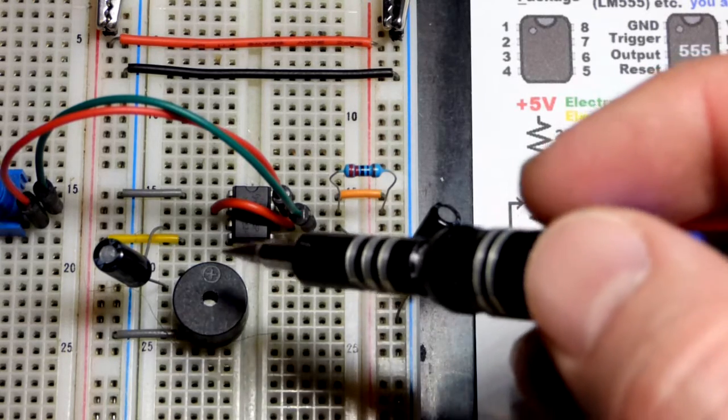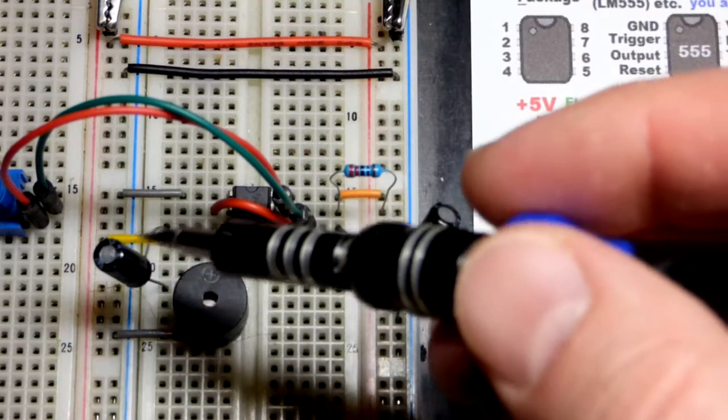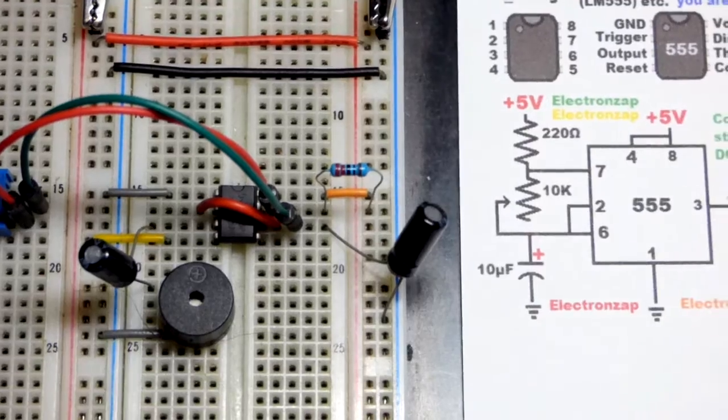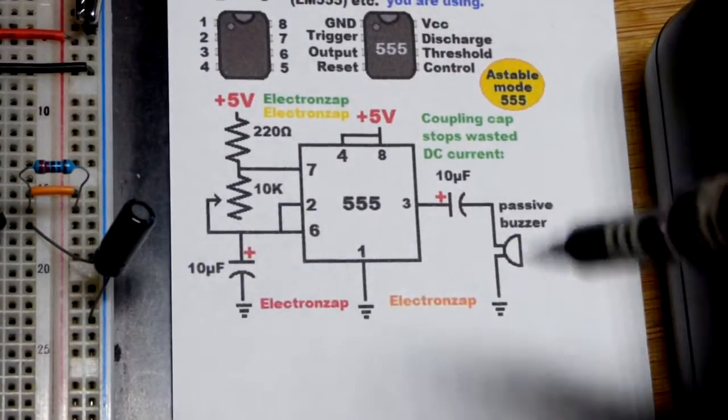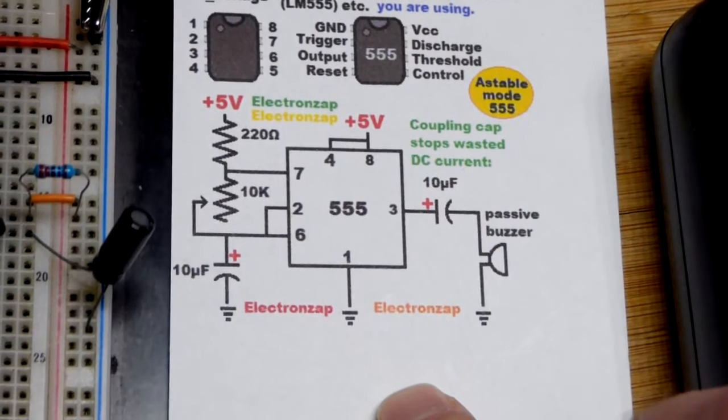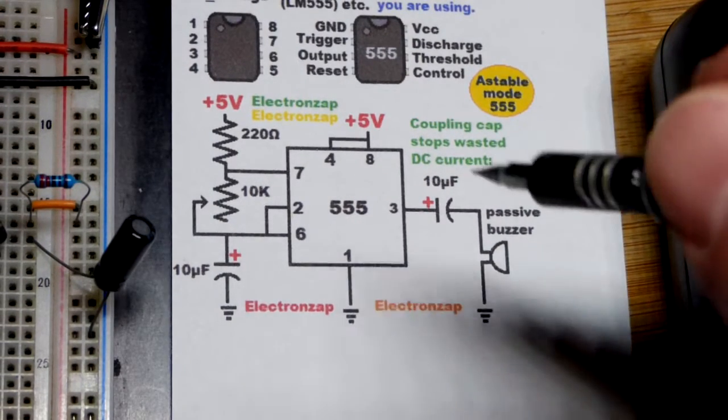But it's pretty simple, hopefully it makes sense. So we got the output. You can see we have what's called a coupling capacitor there. So what do coupling capacitors do? This passive buzzer depends on changing voltages to make its click, but it's really quick with that.